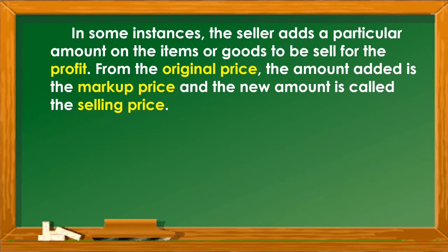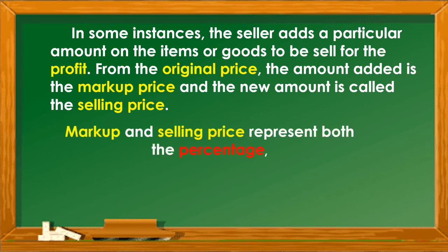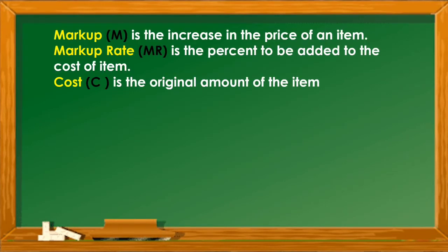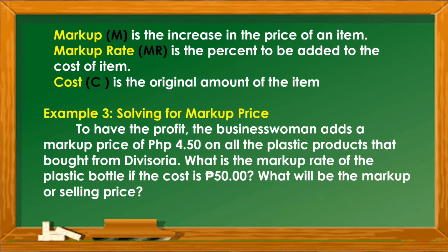In some instances, the seller adds a particular amount on items or goods to be sold for profit. From the original price, the amount added is the markup price and the new amount is called the selling price. Markup and selling price both represent percentage. Cost represents the base and markup rate represents the rate. Markup is the increase in the price of an item. Markup rate is the percent to be added to the cost of the item. Cost is the original amount of the item. Let us have an example for solving markup price.